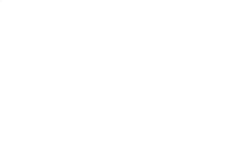Let us do a proof for this one. The proof for alternendo. What you have is a/b equals c/d. First I will cross multiply, which gives you ad equals bc.